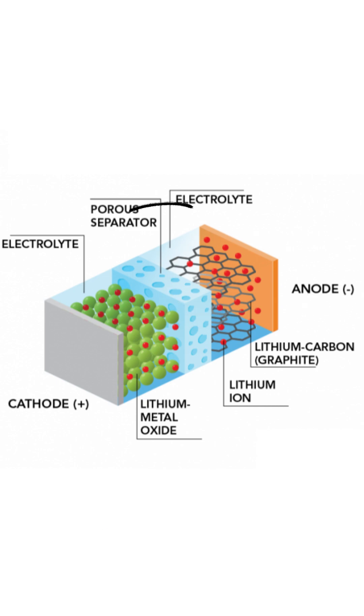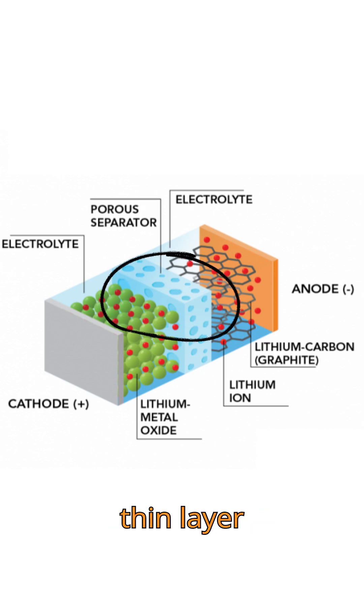The electrolyte, this is a liquid that acts like a bridge, allowing the ions to move. The separator, a thin layer whose job is to prevent the two electrodes from touching, which stops a short circuit and prevents the battery from overheating.